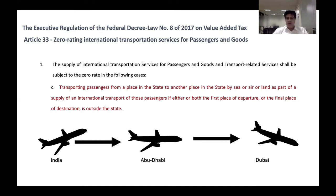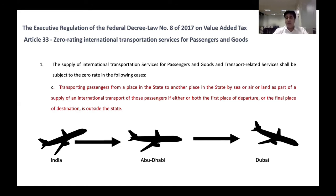The reverse applies too: a flight from India arriving at Abu Dhabi and then continuing to Dubai — the whole leg is considered international transport. You would not break out Dubai to Abu Dhabi and charge 5% VAT on that, because these are only halting or hop flights.